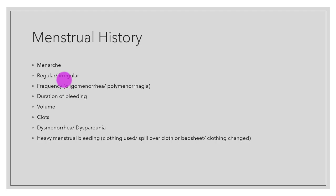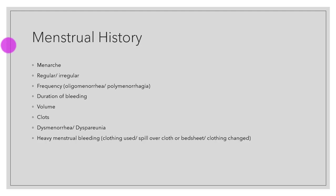We ask about the frequency of the menstrual cycle, the duration of bleeding — how many days per month — the volume of bleeding, whether clots are present, dysmenorrhoea, and dyspareunia. If heavy menstrual bleeding is reported, we repeat the same detailed questions as previously discussed.